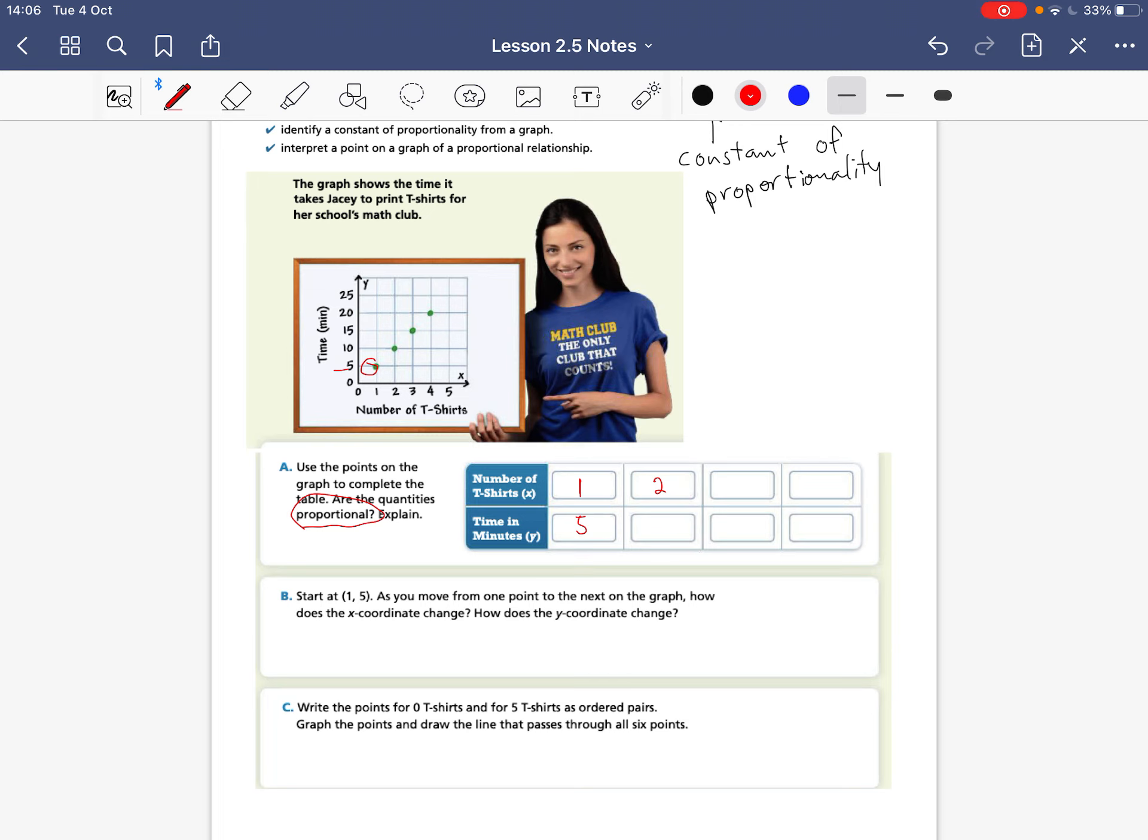And when x is 2, right here, it can be 10 minutes. When it is 3, and you don't have to draw these arrows here, I'm just doing that so you can see where they're at. This is 15. If I was in class, I would just be pointing so you could follow along. And when x is 4, we can see that time is 20.